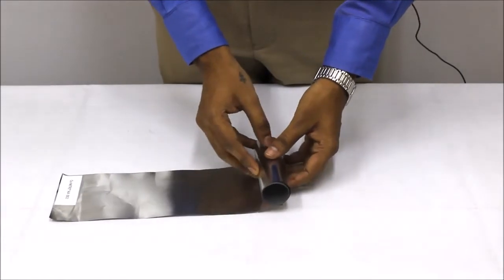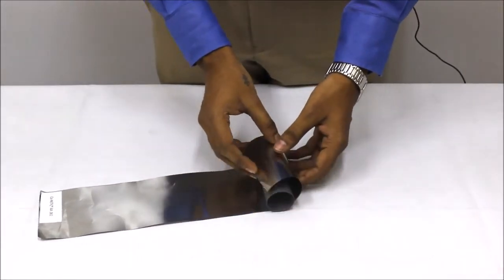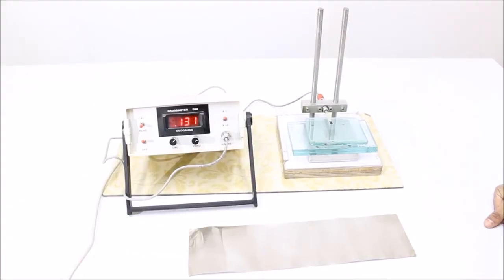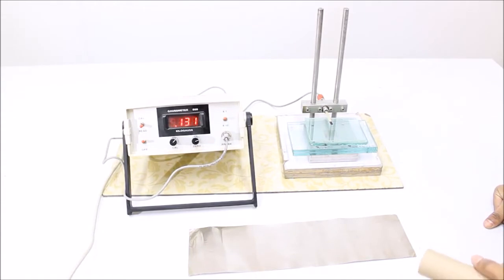MU-Metal Foils provide high shielding attenuation in low intensity magnetic fields. Now I am going to demonstrate how the MU-Metal Foil actually works.